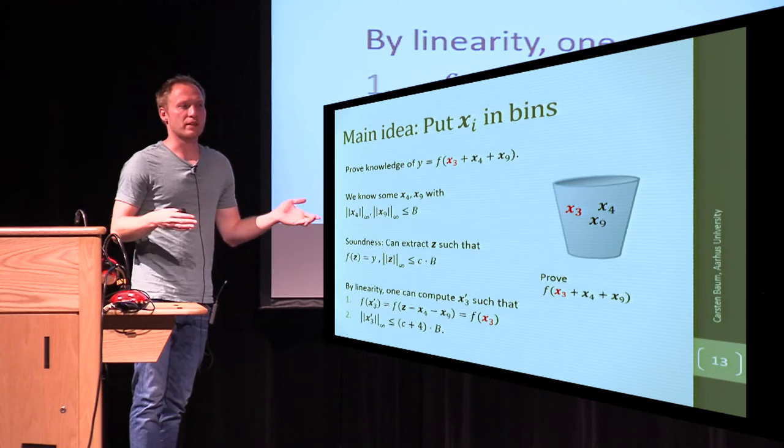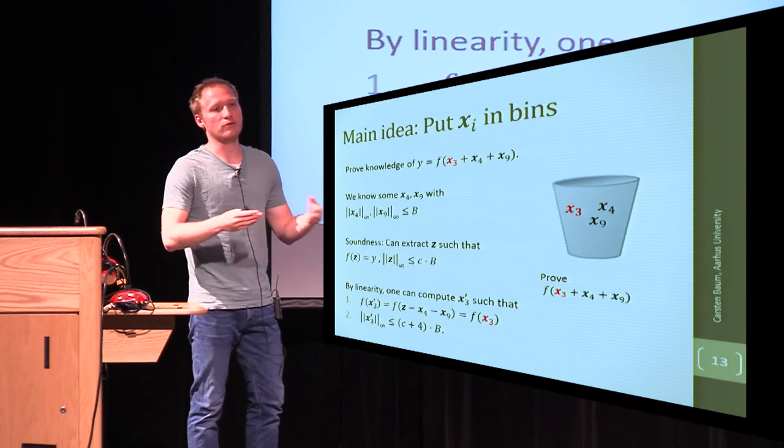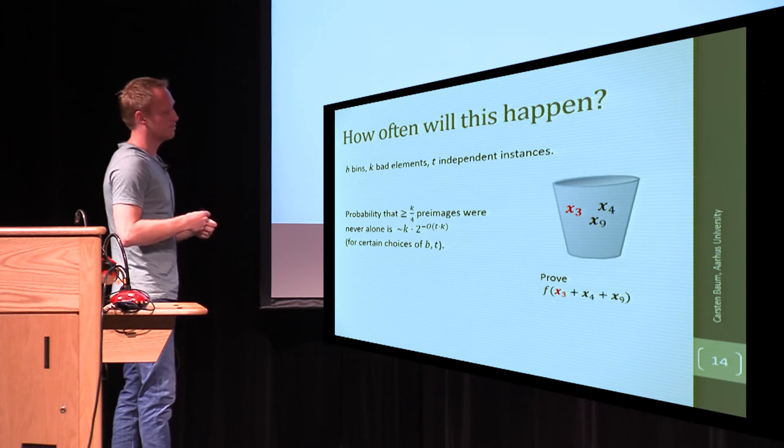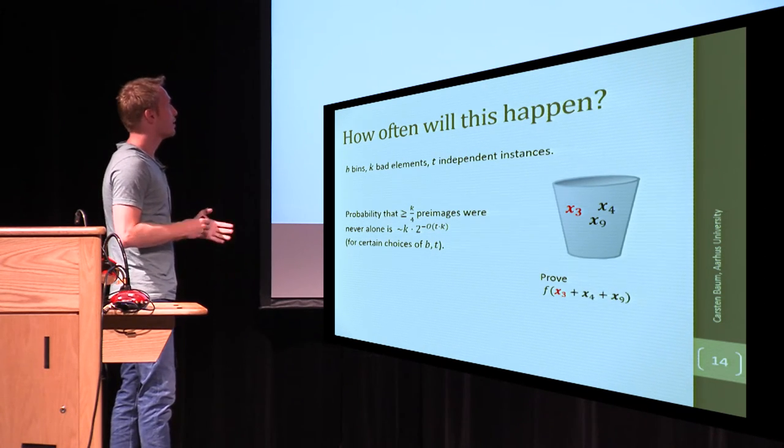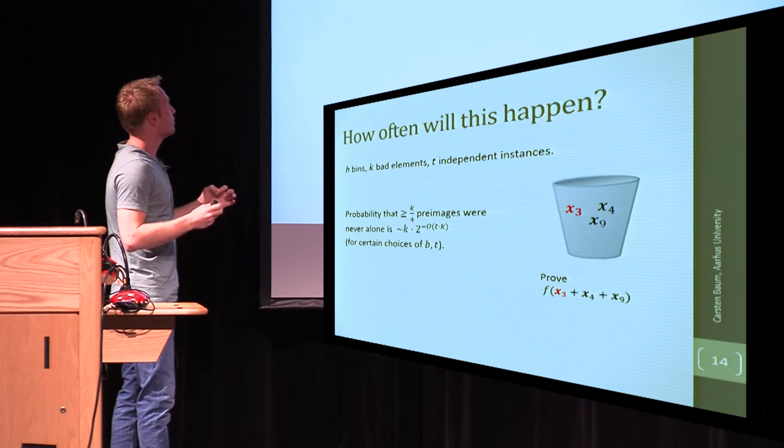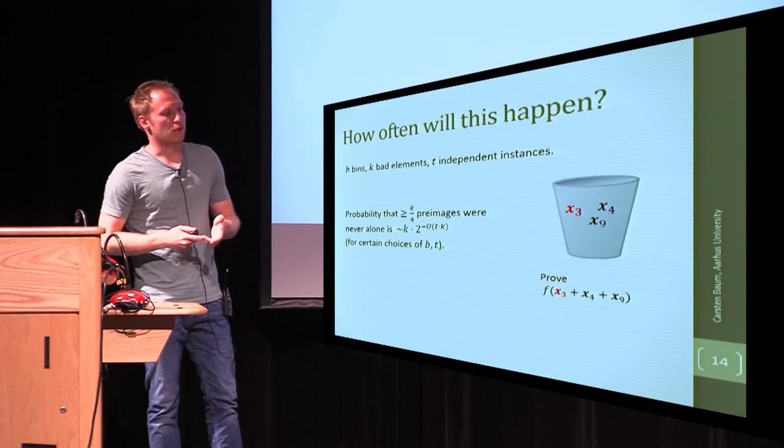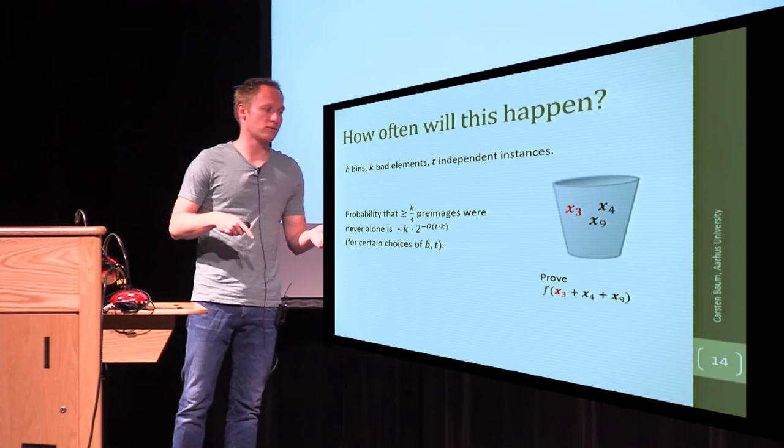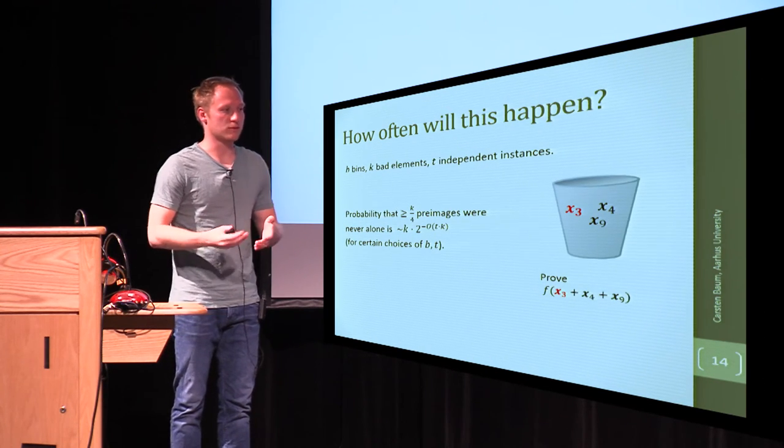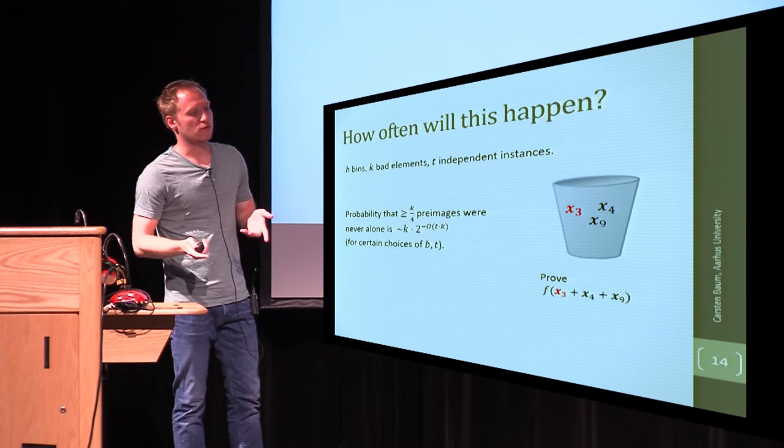So, now we just have to, in an actual proof, now we just have to figure out how often does this event happen, so we know how often the verifier has to generate sums. In our work, we're able to... So, what we do is we establish a certain invariant, which is that for a certain set of bins and bad elements, and if you play this game a few number of times, we show that with probability exponential small in the number of bad pre-images, this event will occur often enough to be able to extract. So, this holds for certain choices of B and T.